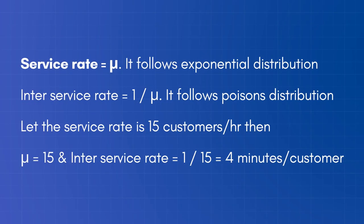Service rate is denoted by mu and follows an exponential distribution. The inter-service rate is given by 1 divided by mu and follows a Poisson distribution. For example, if the service rate is 15 customers per hour, then mu equals 15 and the inter-service rate would be 1/15, or 4 minutes per customer.